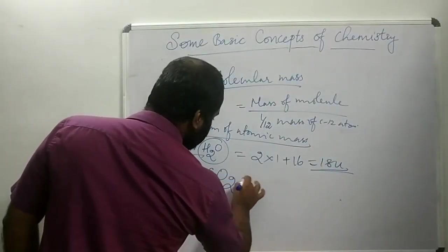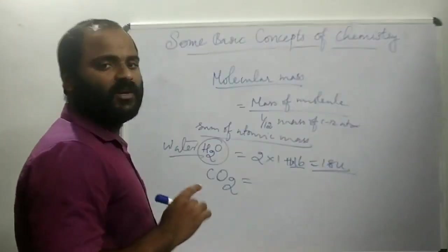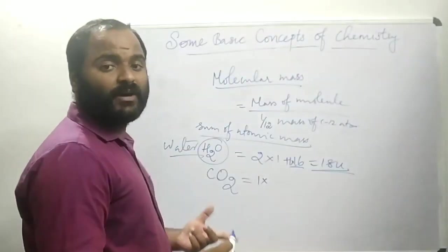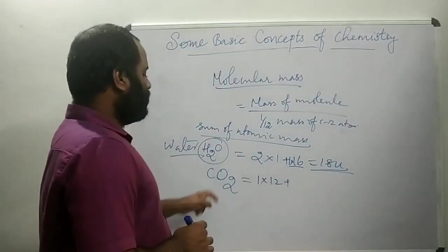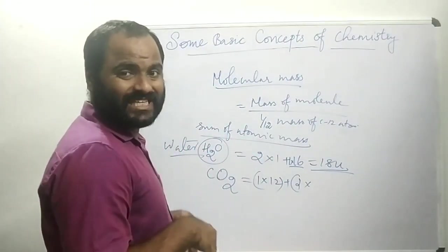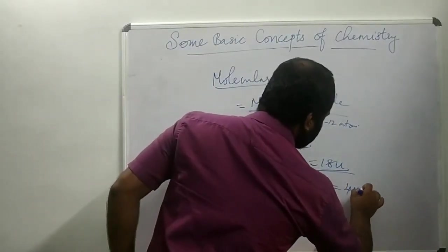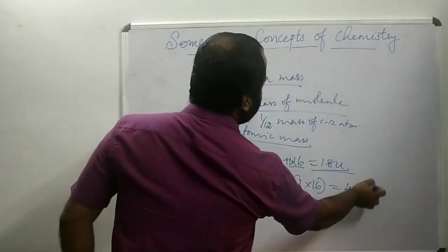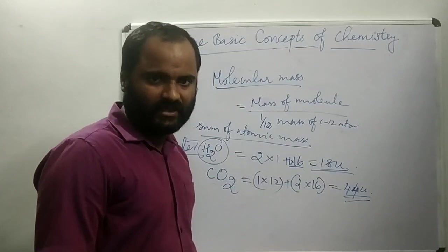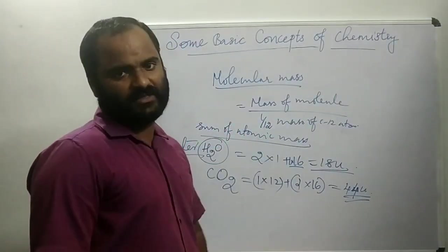You can also find the molecular mass of carbon dioxide (CO₂). There is 1 carbon atom: 1 × 12 (atomic mass of carbon is 12), and 2 oxygen atoms: 2 × 16 = 32. So 12 + 32 = 44u. The atomic mass of carbon dioxide is 44u. Molecular mass is the sum of the atomic masses of all atoms in the molecule.